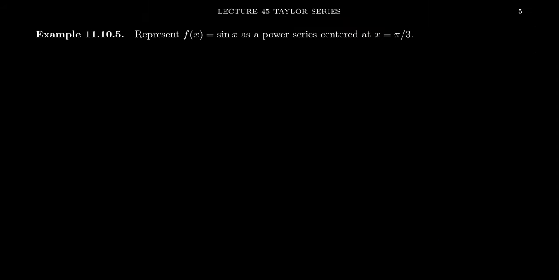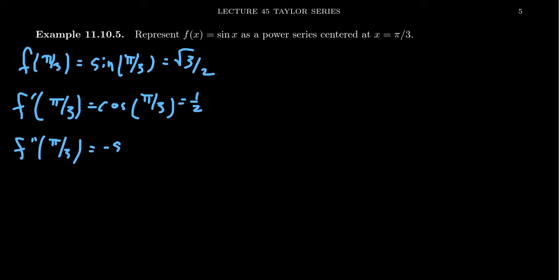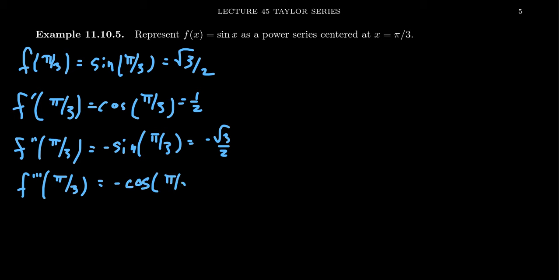For the rest of this video, let's do this exercise again for sine but center it at pi thirds. We know what the derivatives of sine look like. The zeroth derivative evaluated at pi thirds is sine of pi thirds, which is root 3 over 2. The first derivative at pi thirds is cosine of pi thirds, which is 1 half. The second derivative at pi thirds is negative sine of pi thirds, giving negative root 3 over 2. The third derivative was negative cosine — evaluated at pi thirds, that gives negative 1 half.